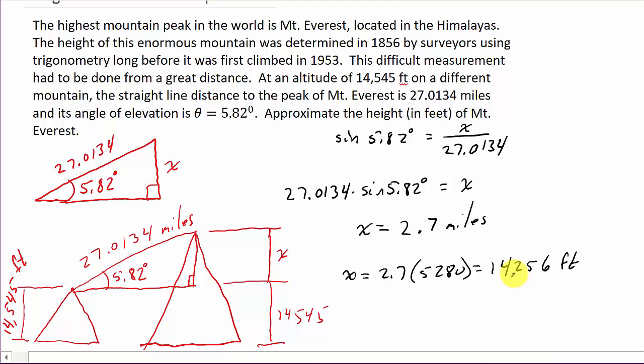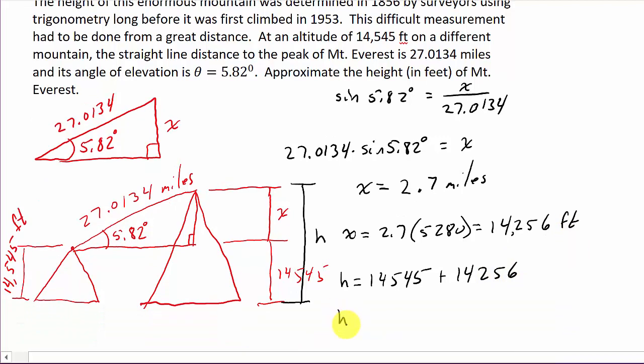Alright, so now what we can do here is we can call this H, the height of Mount Everest. So H is going to be 14,545 plus 14,256. And so we get H = 28,801 feet. And so that would be the height of Mount Everest.